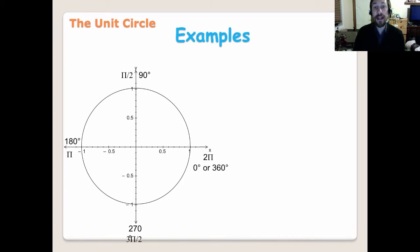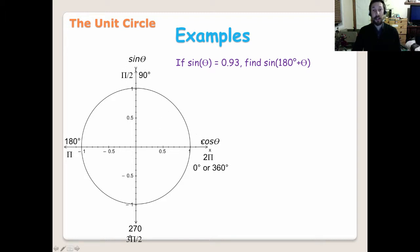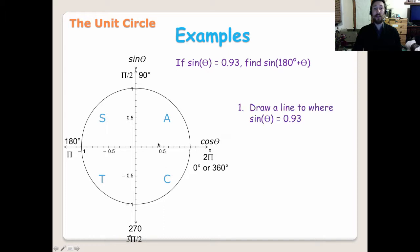We're going to have a look at it in terms of a different type of question that you might get. It says: if sine of theta is equal to 0.93, find sine of 180 plus theta. So what we need to do first of all is draw an angle where sine of that angle will equal 0.93. The first thing we need to do is write our sine and our cos axis. And then we're going to go all stations to Croydon — that is, all of them are positive: sine's positive, tan's positive, and cos is positive. Then we need to figure out whereabouts our line will be if sine of theta is going to be equal to 0.93.